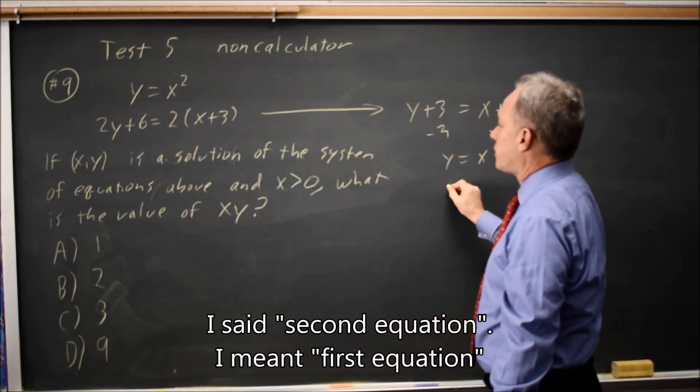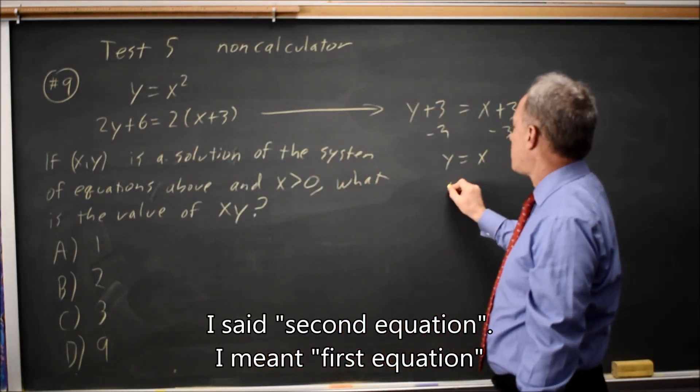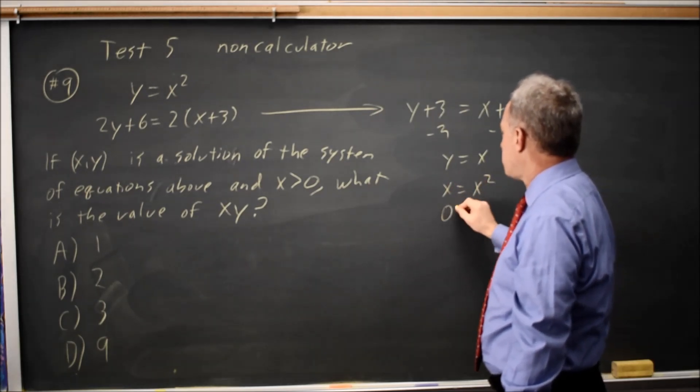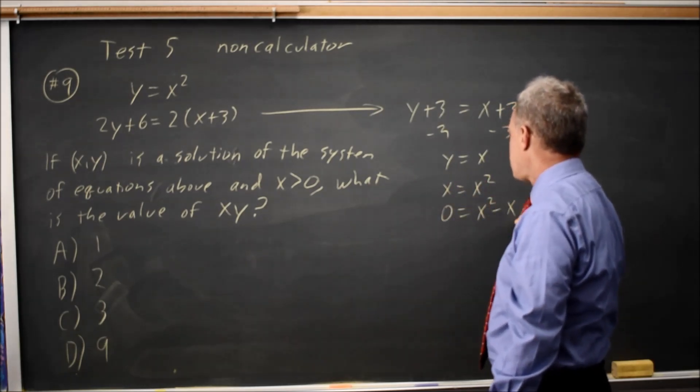If y equals x, then I can substitute x in on the left for y and get x equals x squared, or 0 equals x squared minus x.